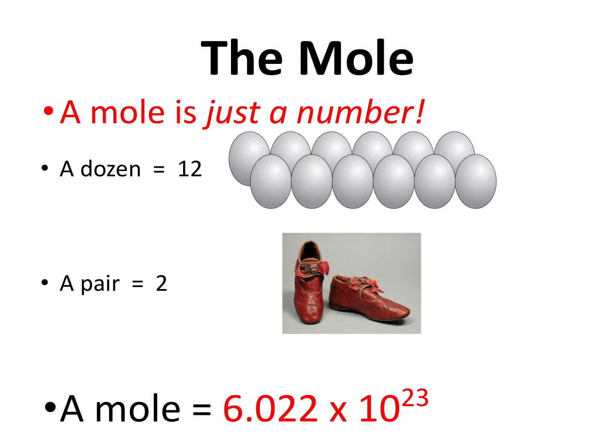For example, if I say to you 'a dozen,' you don't freak out — a dozen is just 12, it's a way of counting eggs. Same with a pair: three pairs of shoes is six shoes. So what is a mole? Well, it's the number 6.022 times 10 to the 23. That's all it is — just a number. It's a big number, but that's all it is.